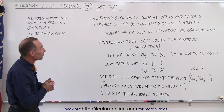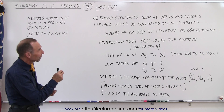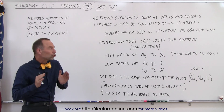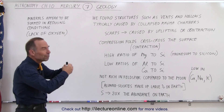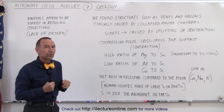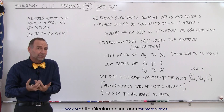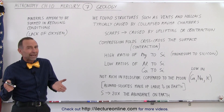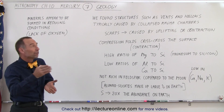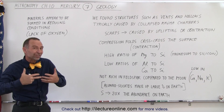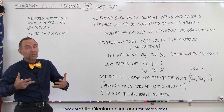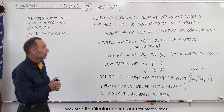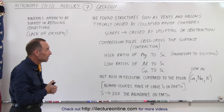First of all, we found structures called vents and hollows. Those are usually caused by the collapse of magma chambers. Since there hasn't been much volcanism in later years, those are things that probably happened a very long time ago, and we still see the remnants of that because there haven't been many changes besides the impacts of meteorites.